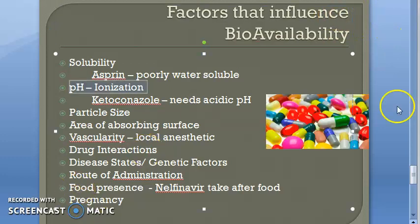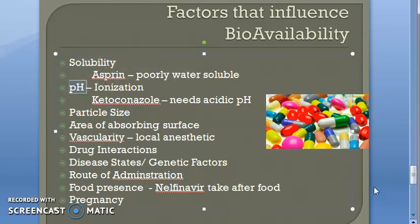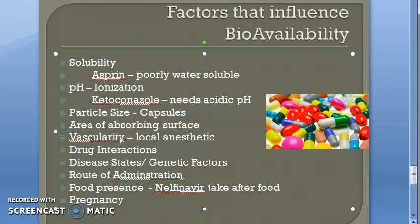The drug's own properties affect bioavailability. The form — solid, liquid, or gas — affects solubility, which matters a lot. The pH of the drug also matters: for example, ketoconazole requires an acidic pH and is therefore absorbed in the stomach. Particle size is also important — in capsules, small particles dissolve quickly for rapid availability, while larger particles dissolve slowly to sustain bioavailability over time.